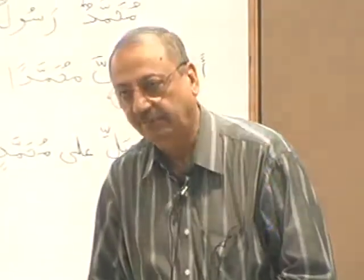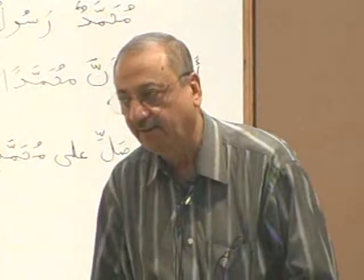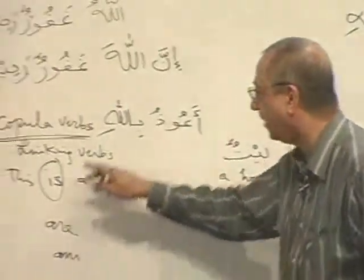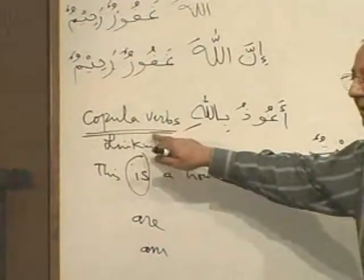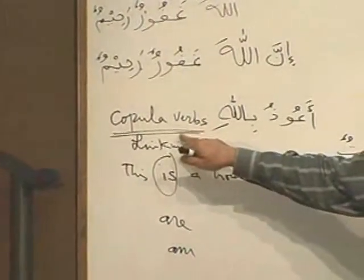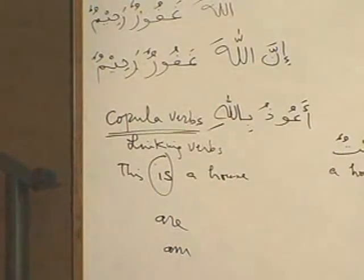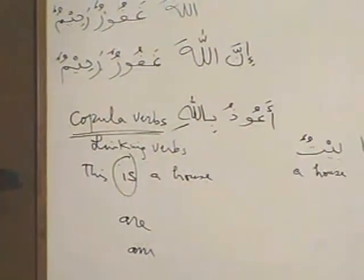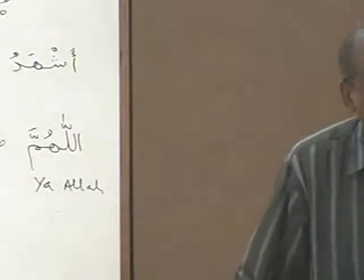What are 'is,' 'am,' and 'are' called in English grammar? Copula verbs. Yes. So in Arabic there is no linking word — there is no linking word. It is understood to be there; we understand it, but it's not there. Okay, brothers and sisters?